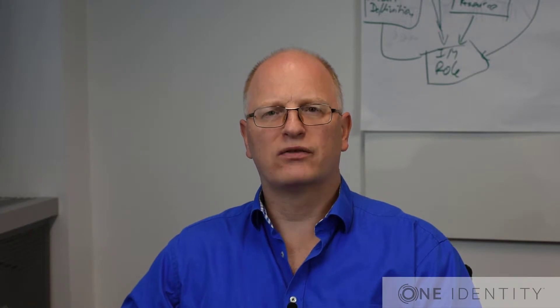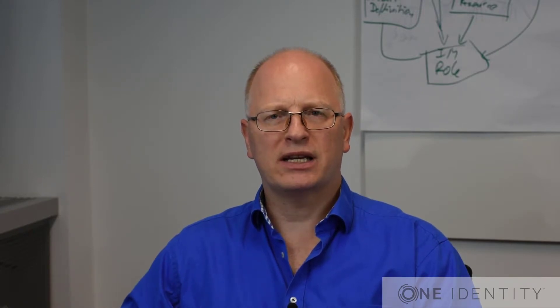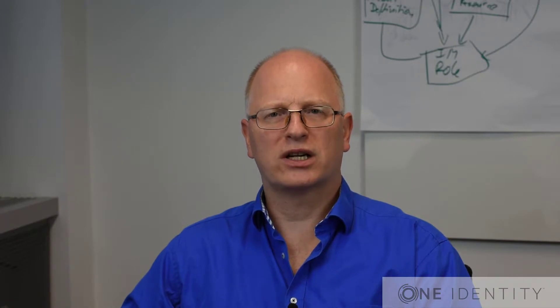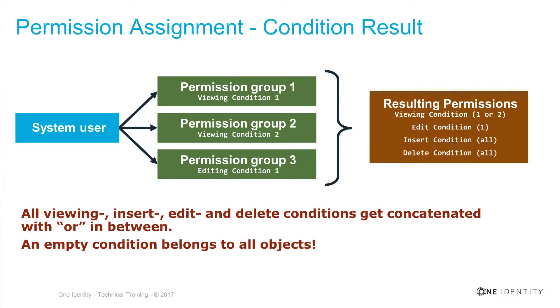Subset permissions can be assigned for viewing, deleting, updating, and similar actions. They are defined on the object class level — that means on the table level from a database structure perspective. The question now is what happens if you are in more than one group with different subset permissions. The answer is like before: the addition of all of them will lead to the effect, meaning the maximum permission set is given.